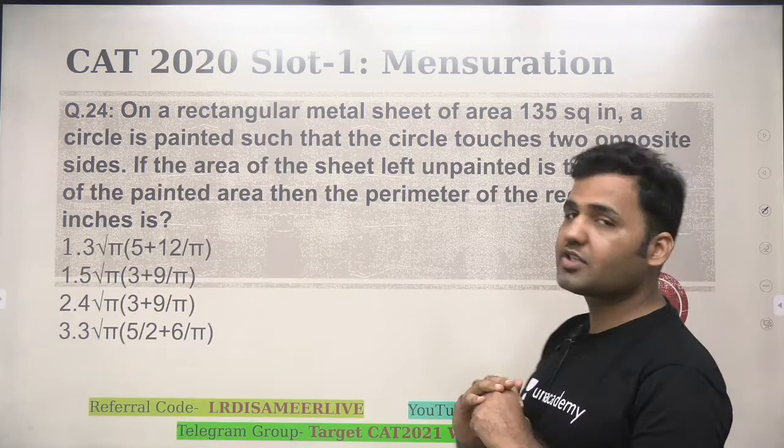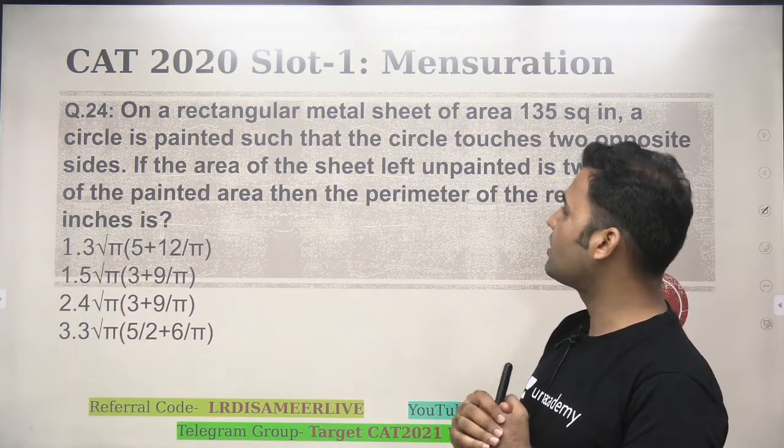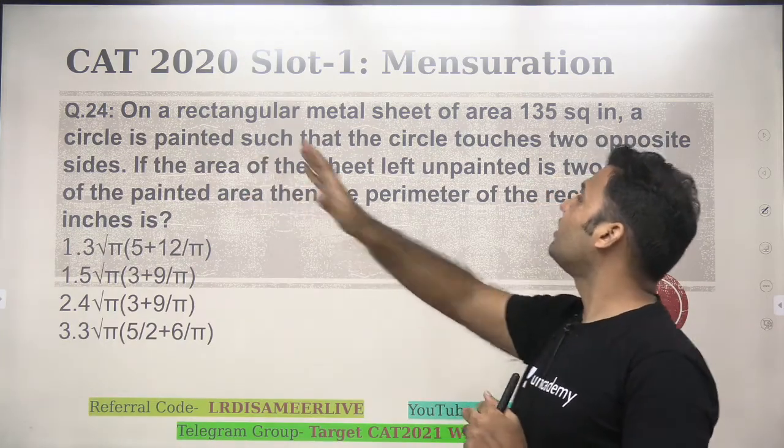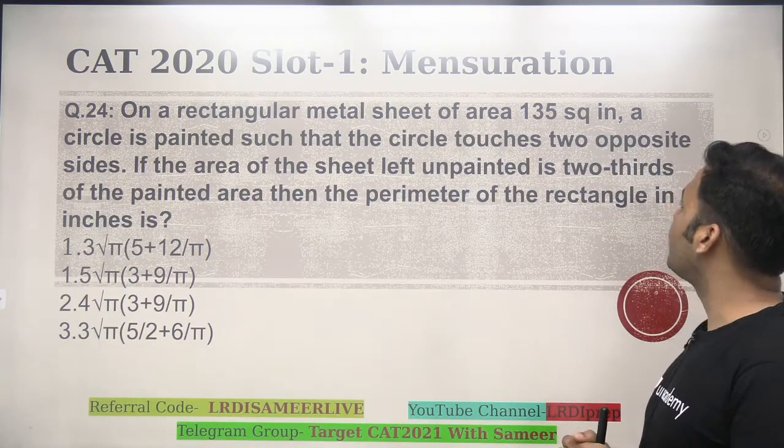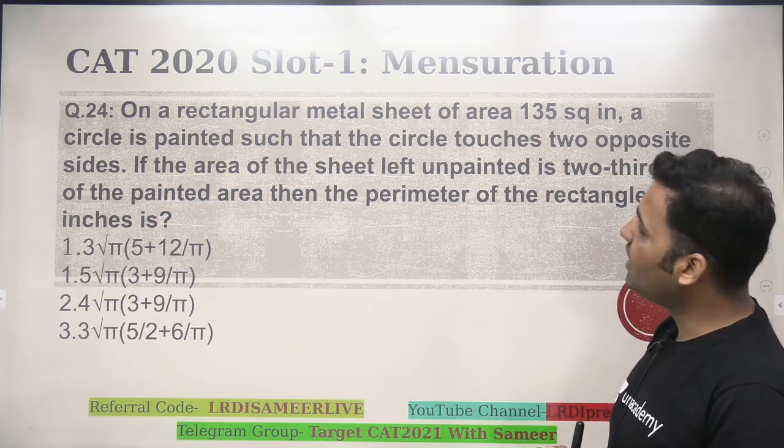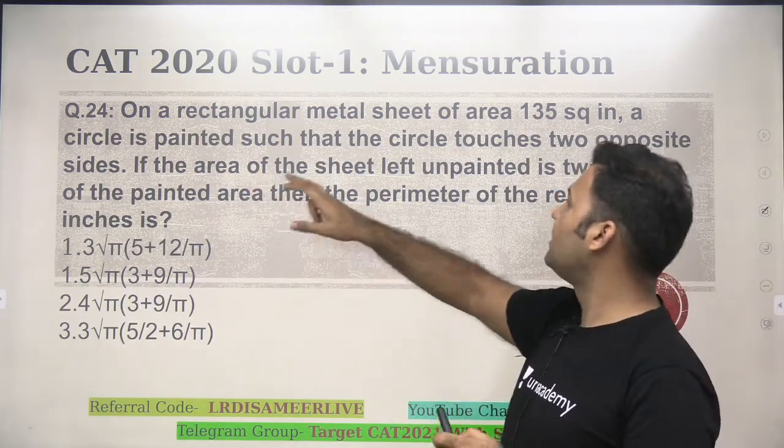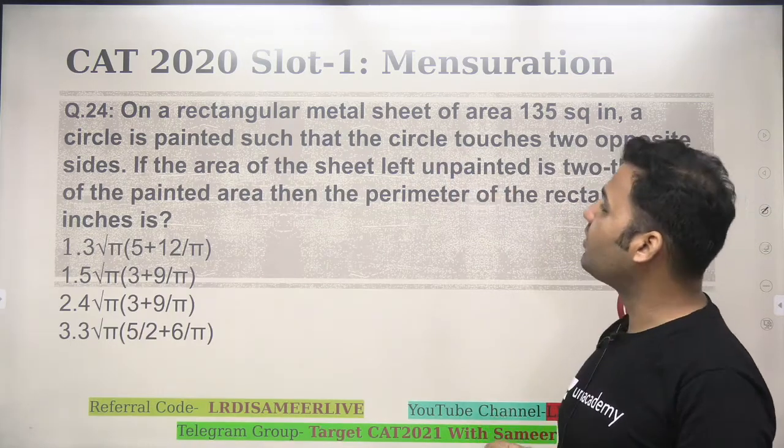Question number 24. A very simple question of mensuration asked in CAT 2020 slot 1. It says, on a rectangular metal sheet of area 135 square inch, a circle is painted such that the circle touches two opposite sides.